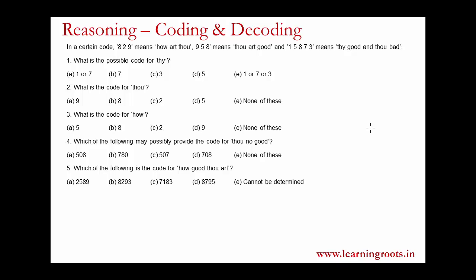A major mistake people make in these questions is assuming that the order in which the words are given and the order in which the codes are given correspond to each other. That is not really the case unless it is explicitly mentioned — for example, 'in a certain code 829 is how art thou in that order only.'